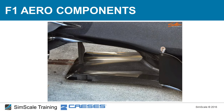Let's move further and talk about the tea tray — the leading edge of the floor. This part works in the ground effect, very close to the floor, helping the floor and diffuser accelerate air as much as possible. Its role is also to split and channel air to the side pod from both sides and from below, and its edges create vortices to control underbody flow and create additional suction beneath the car.